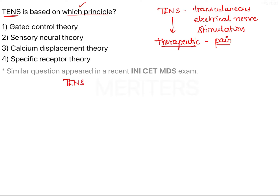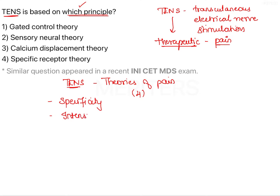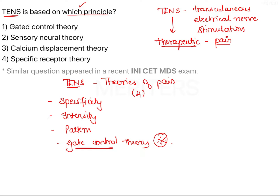TENS is associated with pain management and therefore it is based on one of the theories of pain. We should remember four influential theories of pain perception: Specificity Theory, Intensity Theory, Pattern Theory, and Gate Control Theory — of which the most important one is the Gate Control Theory. It visualizes pain modulation well. Therefore, from the given four options, TENS is based on the Gate Control Theory.